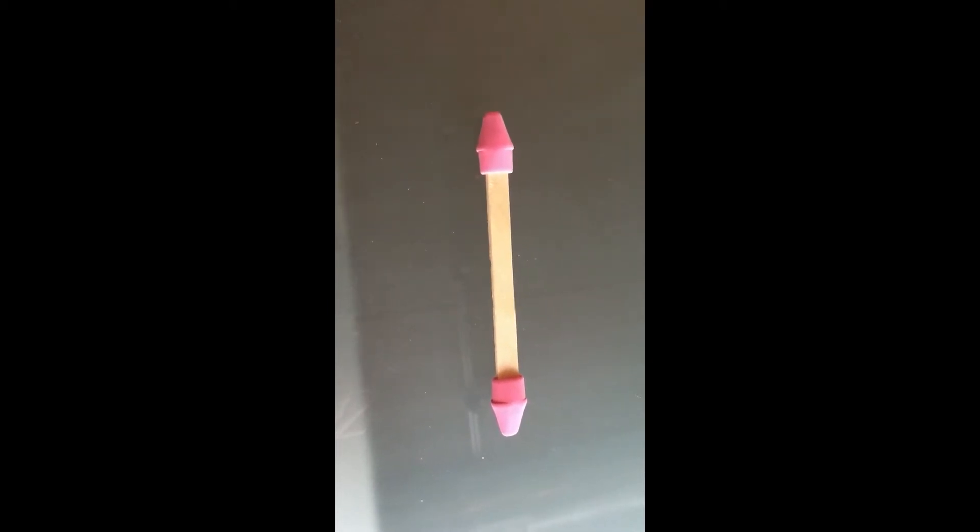Step one is to put both cap erasers on either end of the popsicle stick, just like this.